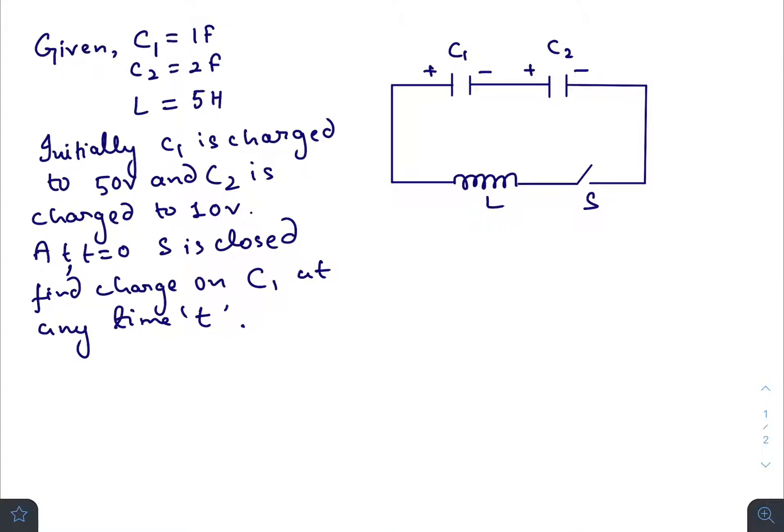Many times students face difficulties in LC circuits or LCR circuits. They find it difficult to make the relevant differential equation and how to solve it. So here I have a question from LC circuits, and I will try to explain how you will find the charge on the capacitor at any time t and how you will be able to find out the current flowing through the circuit at any time t.